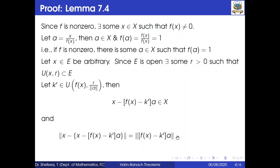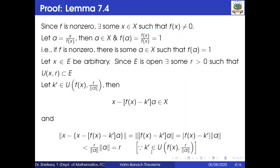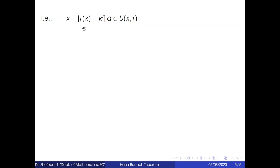The norm of x minus (f of x minus k-prime) times a equals mod(f of x minus k-prime) times norm of a, which is less than (r divided by norm a) times norm a, since k-prime belongs to the open ball about f of x with radius r over norm a. This equals r, so x minus (f of x minus k-prime) times a belongs to the open ball B(x, r), which is a subset of e.